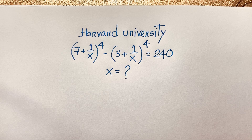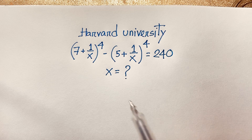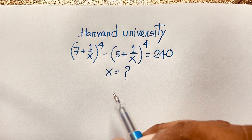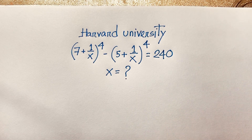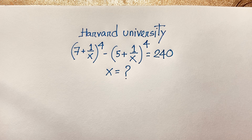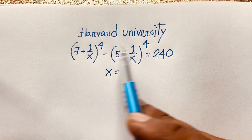Hello everyone. In this video we solve a nice exponential expression: (7 + 1/x) to the power 4 minus (5 + 1/x) to the power 4 is equal to 240. We'll find out the value of x in this math question.